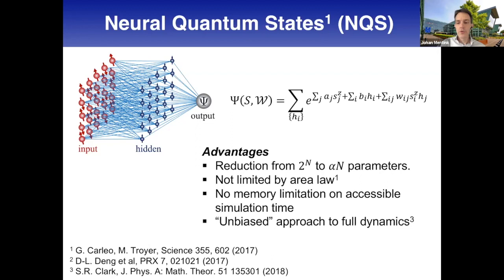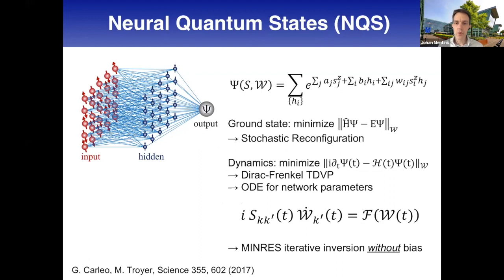This is the method we will use. We do ground state optimization by minimizing using the stochastic reconfiguration method, which we found most stable and gives most accurate access to the lowest energy. For time evolution we use the time-dependent variational principle, similar to the previous talk, which gives an ordinary differential equation for the network parameters with this famous covariance matrix containing derivatives of the wave function.